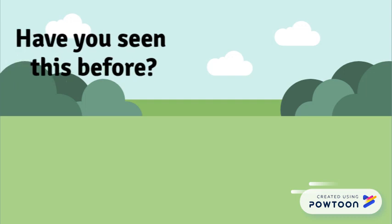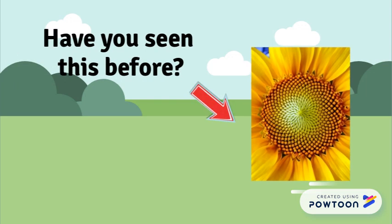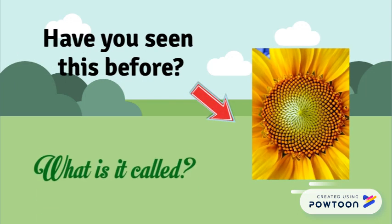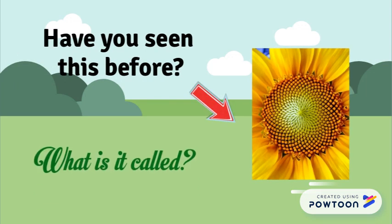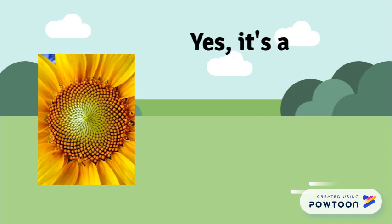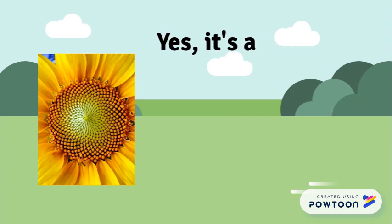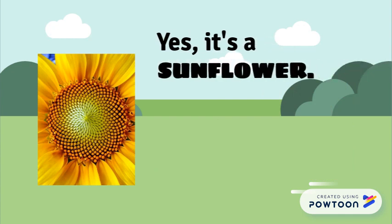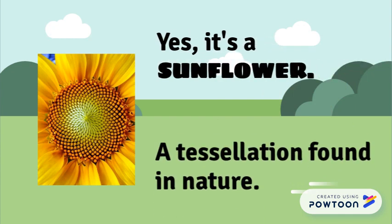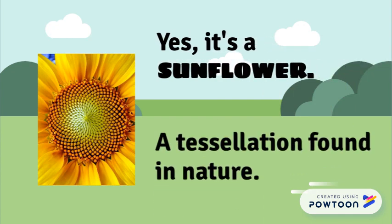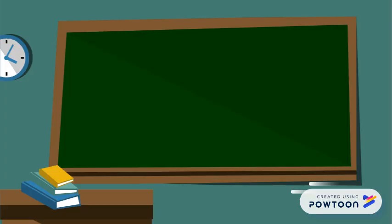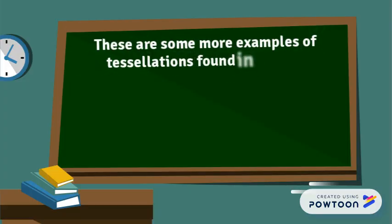Have you seen this before? What is it called? Yes, it's a sunflower — a tessellation found in nature. These are some more examples of tessellations found in nature.